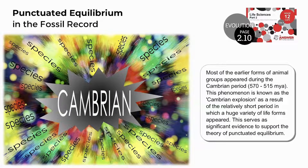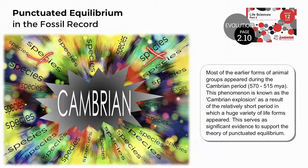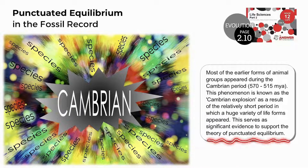Gould and Eldridge noted that all major animal body plans of complex animals suddenly appeared all at once in the fossil record during the first period of the geological scale known as the Cambrian period. This burst of species is known as the Cambrian Explosion, where fossils of every major animal phylum appeared fully formed with little or no evidence of evolutionary ancestors or transitional fossils in earlier layers. The majority of these groups died out, and the survivors formed the species we see on our planet today. This Cambrian Explosion serves as evidence to support punctuated equilibrium.